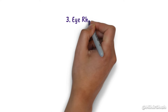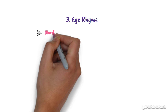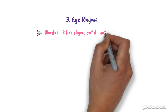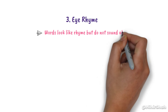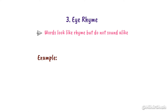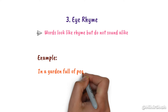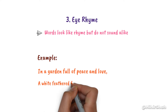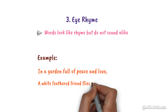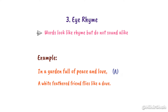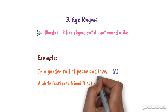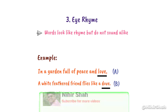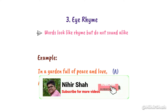Number 3, Eye Rhyme. Here, the words look like they should rhyme but they do not sound alike. For example: 'In a garden full of peace and love, a white feathered friend flies like a dove.' Here, 'love' and 'dove' look like they rhyme but they do not sound alike.